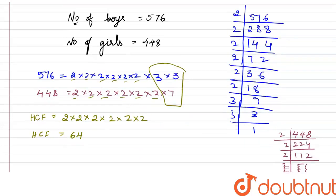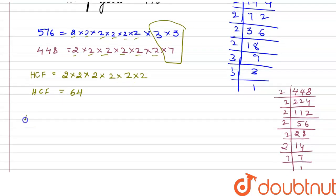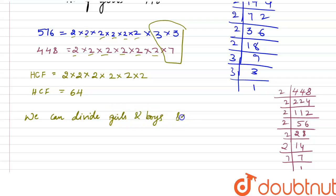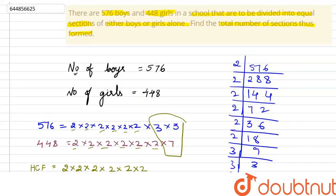What does this HCF mean for our question? It means we can divide the boys and girls into sections with a section size of 64. So the maximum equal section size is 64 students.